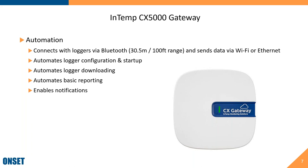The Intemp CX 5000 Gateway is your automation tool. The apps are for manual controls — you manually download and configure. The gateway automates all these activities. It connects with loggers via Bluetooth, so loggers must be in range of the gateway or the mobile devices, which have up to a 30.5 meter range.